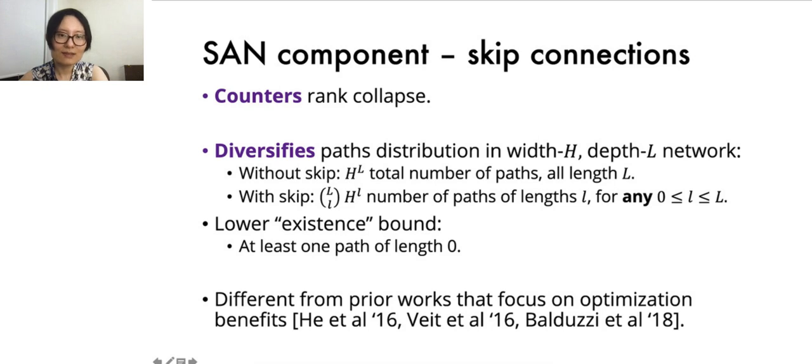Indeed, in the presence of skip connections, the path length distribution is much more diverse. In practice, there are many more paths of short lengths, less than the depth of the network. In practice, there is at least one path of length zero, so the rank of the output is at least as large as the rank of the input. This also shows a previously unknown benefit of skip connections, apart from their benefits facilitating network optimization.